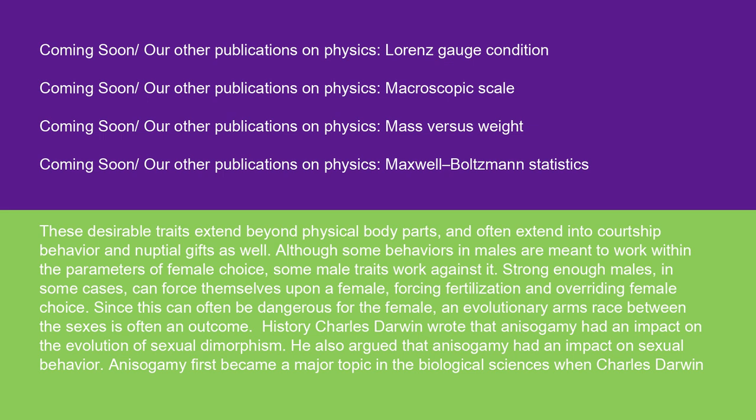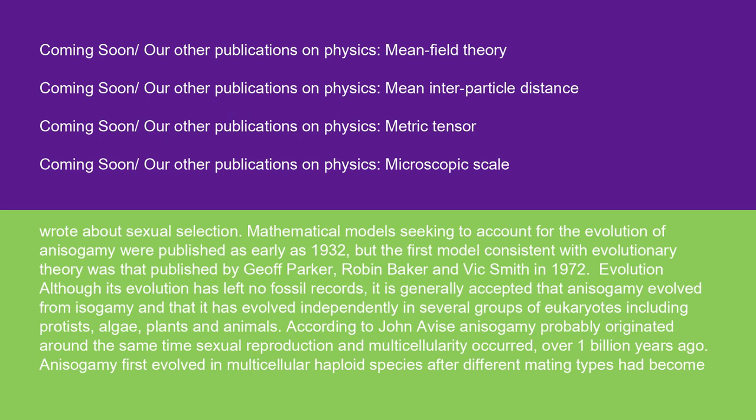History: Charles Darwin wrote that anisogamy had an impact on the evolution of sexual dimorphism. He also argued that anisogamy had an impact on sexual behavior. Anisogamy first became a major topic in the biological sciences when Charles Darwin wrote about sexual selection. Mathematical models seeking to account for the evolution of anisogamy were published as early as 1932, but the first model consistent with evolutionary theory was that published by Jeff Parker, Robin Baker, and Vic Smith in 1972. Although its evolution has left no fossil records, it is generally accepted that anisogamy evolved from isogamy and that it has evolved independently in several groups of eukaryotes including protists, algae, plants, and animals.